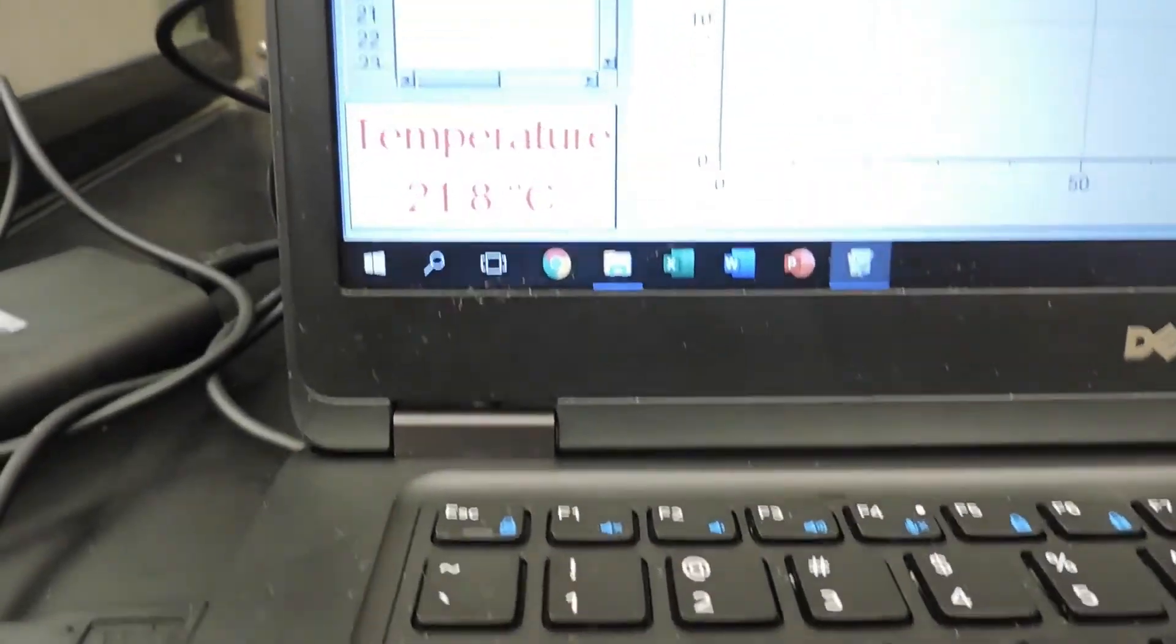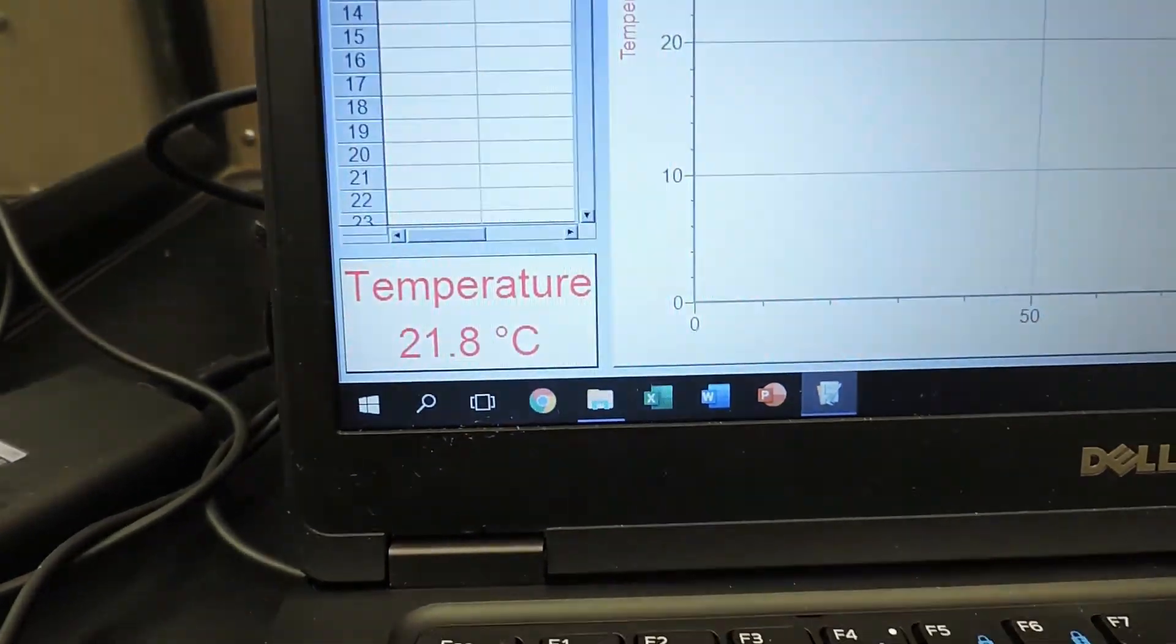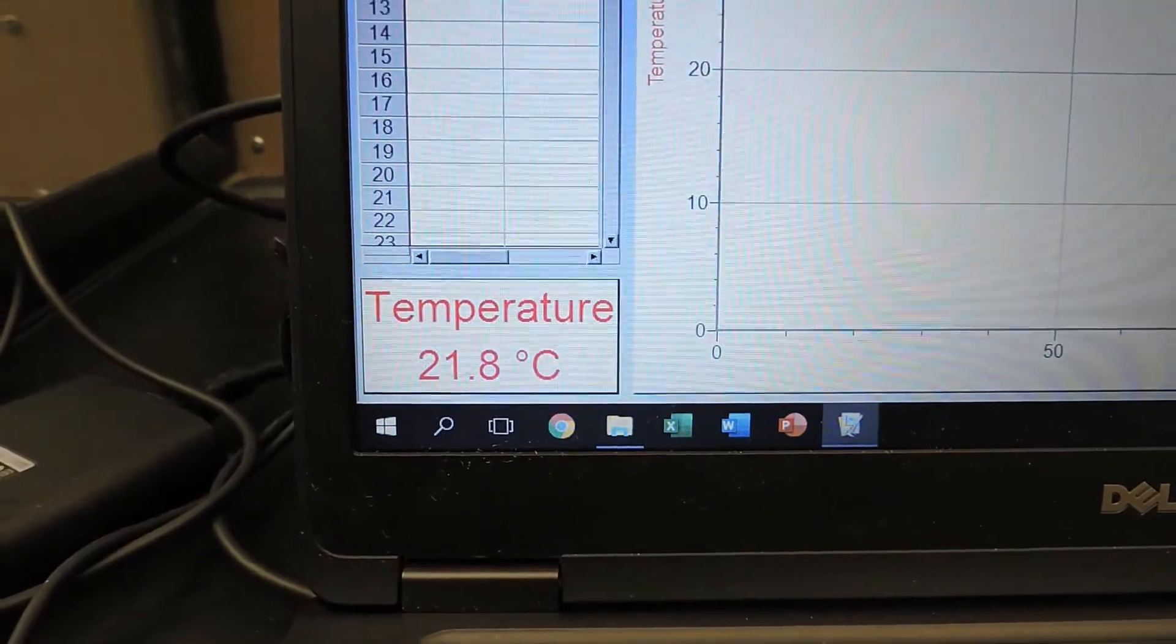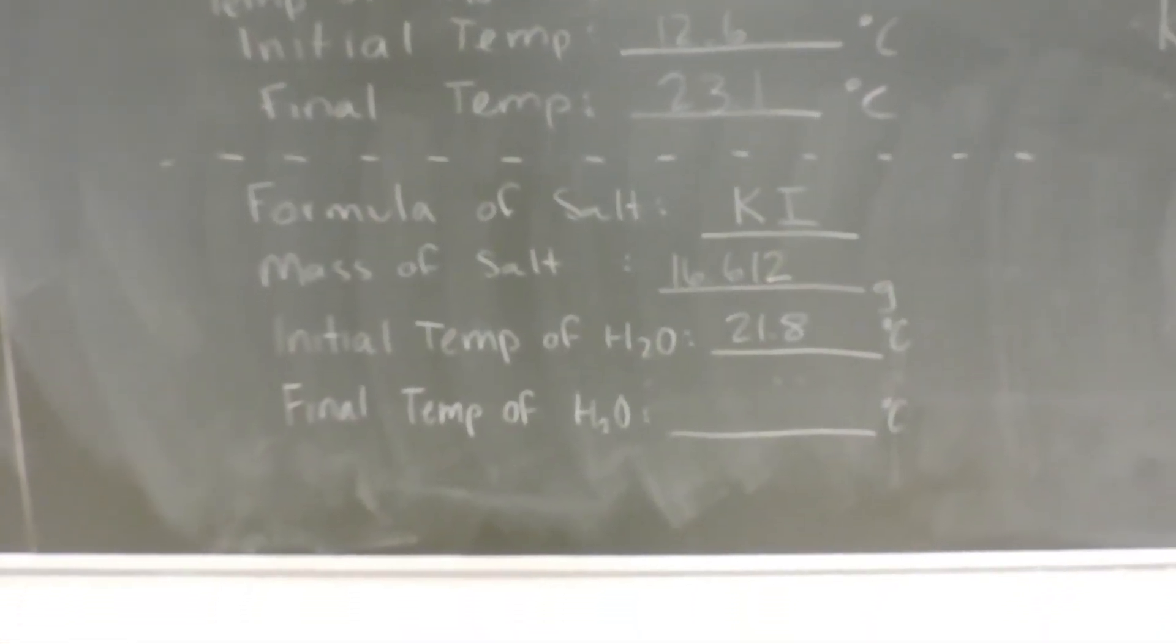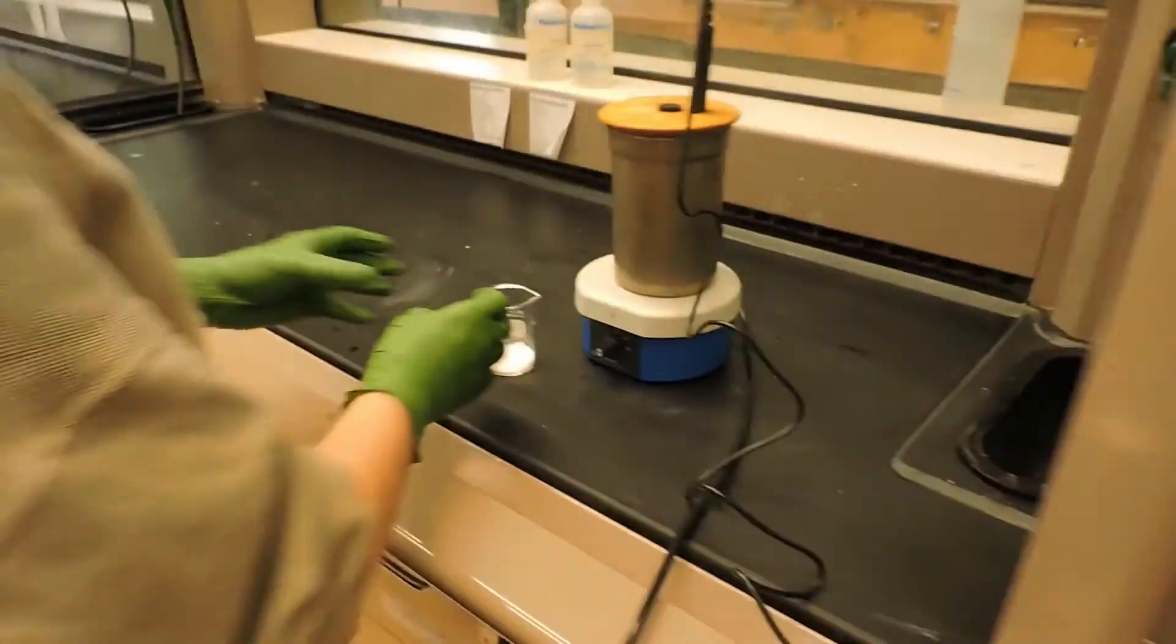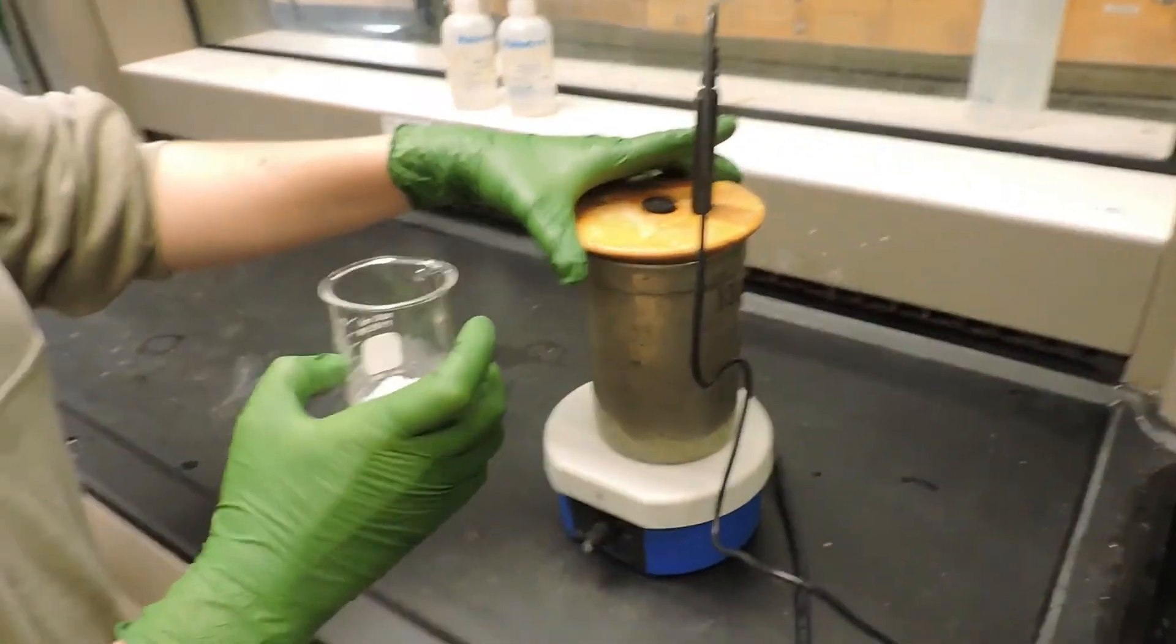It appears our initial temperature that the calorimeter is set up to stabilize at is 21.8 degrees Celsius. We will now begin collection and add potassium iodide to the stirring calorimeter.